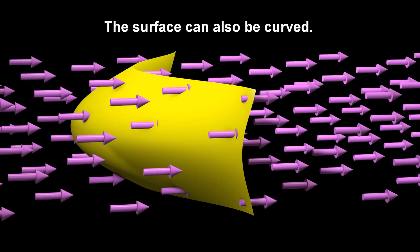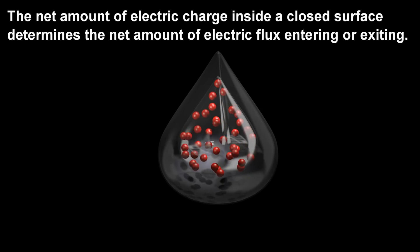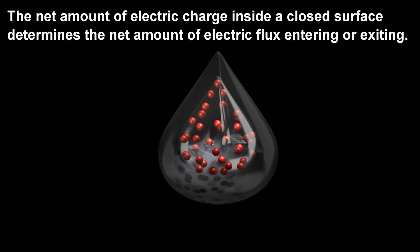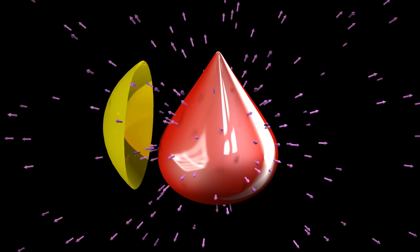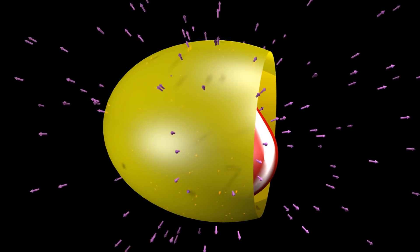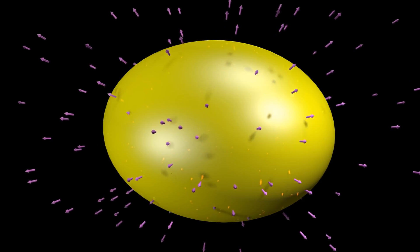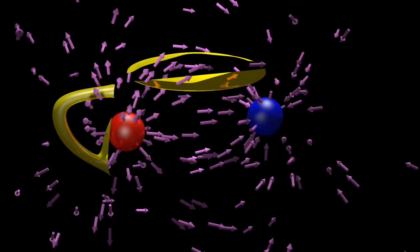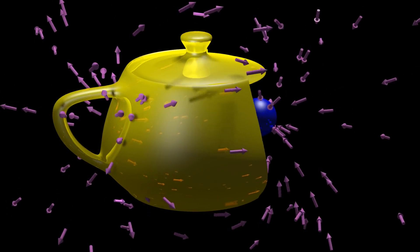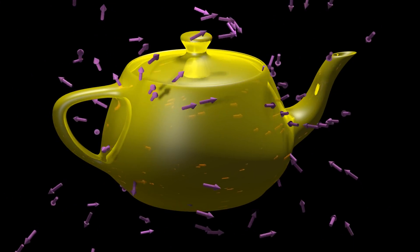The surface can also be curved. The net amount of electric charge inside a closed surface determines the net amount of electric flux entering or exiting. This remains true regardless of the size or shape of the closed surface. Particles with opposite charges cancel each other out; hence, any closed surface containing just these two particles will have an electric flux exiting that is exactly equal to the amount of electric flux entering.